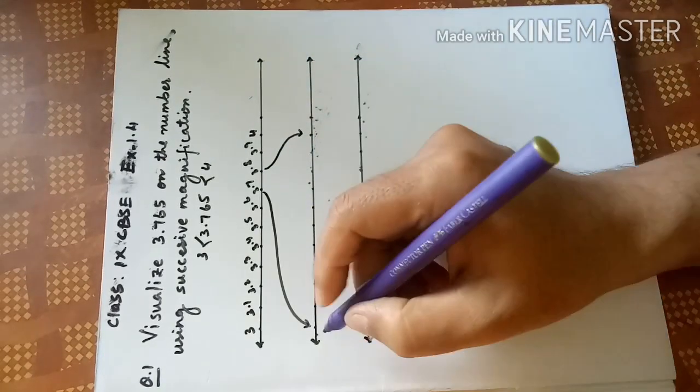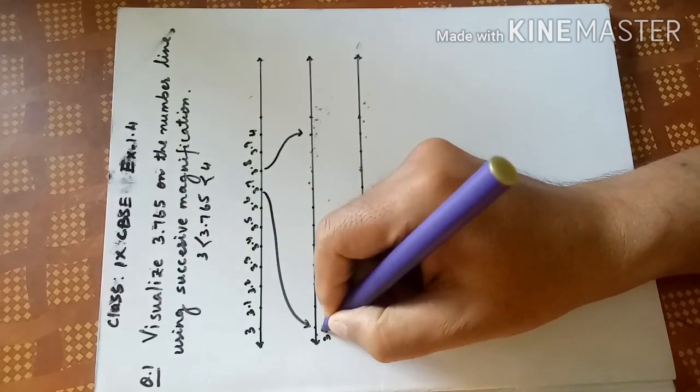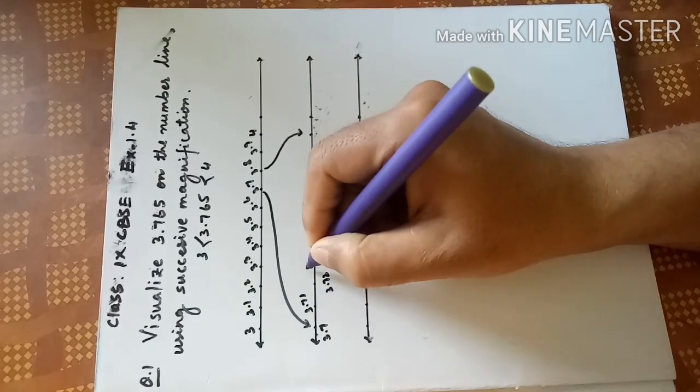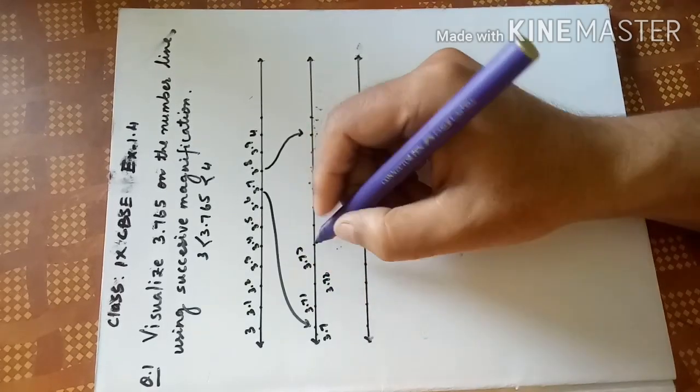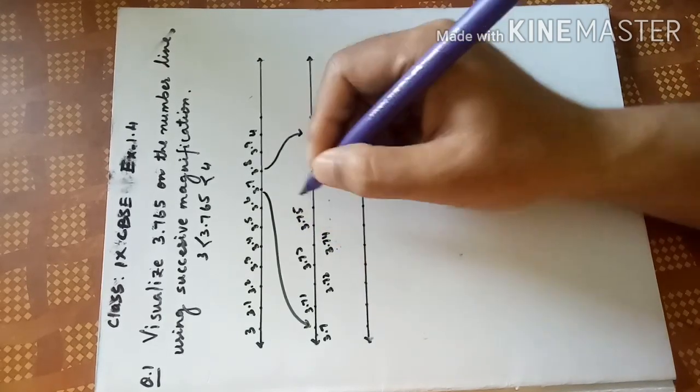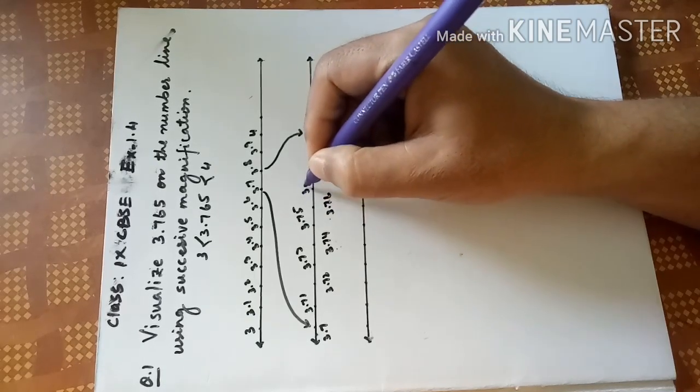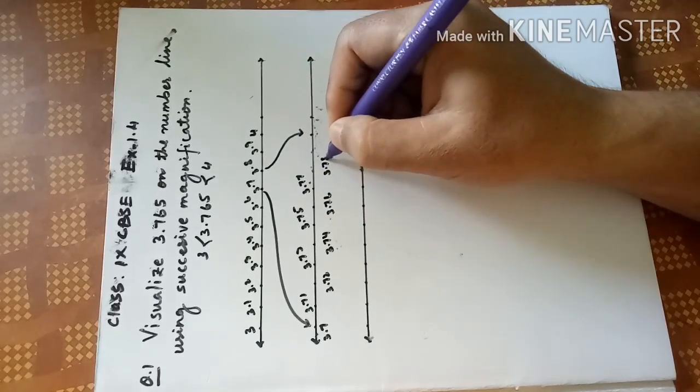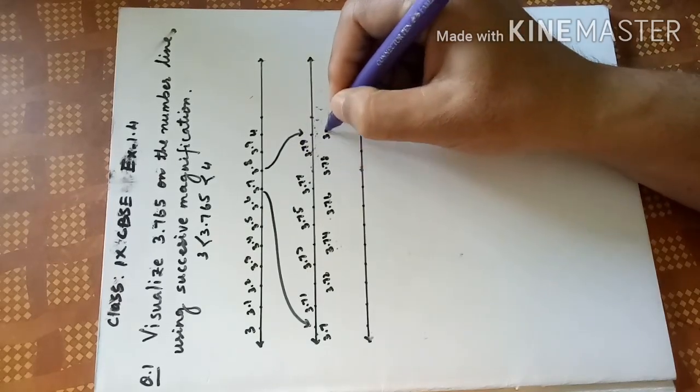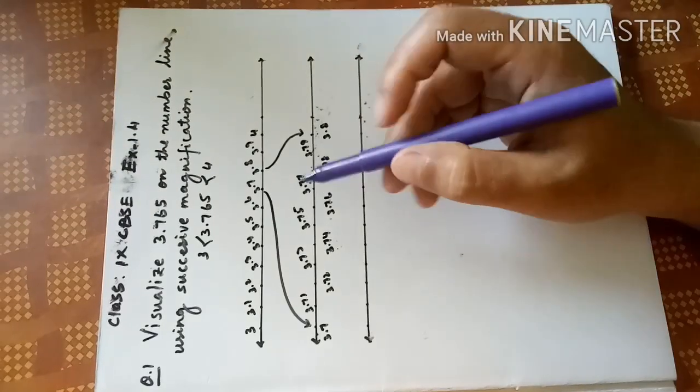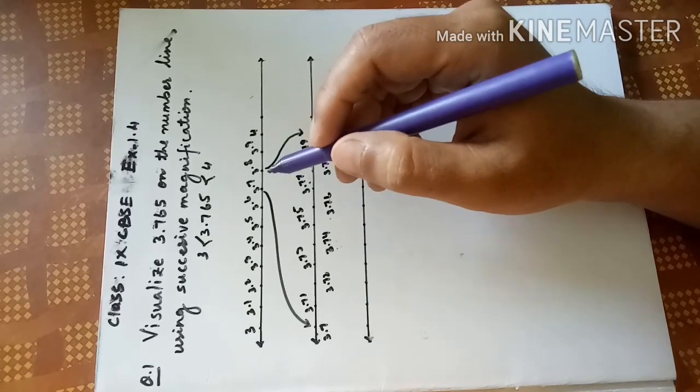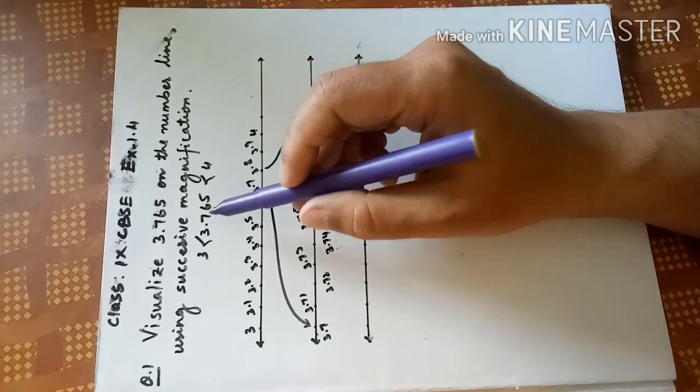Between 3.7 and 3.8, so you start from 3.7: 3.71, 3.72, 3.73, 3.74, 3.75, 3.76, 3.77, 3.78, 3.79, 3.8. So we found now 3.76 is between 3.7 and 3.8. Now again we have to take another digit.